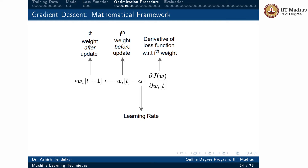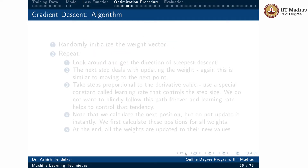This becomes the weight at the next time step t+1. This is the update rule used by gradient descent. This is the step-by-step gradient descent procedure: we randomly initialize the weight vector, assigning random values to each weight, and then repeat the following steps.